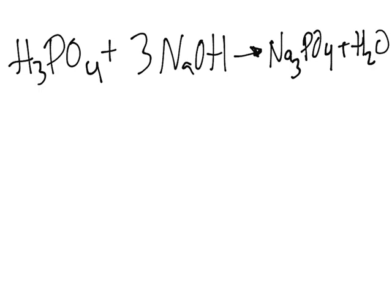We have three sodiums on the left and three sodiums on the right. Phosphorus is the same on both sides. For hydrogen: three from H3PO4, plus three from NaOH gives six hydrogens, so we need three water molecules. For oxygen: four from H3PO4 plus three from NaOH equals seven; and four from Na3PO4 plus three from 3H2O equals seven. So this equation is balanced.